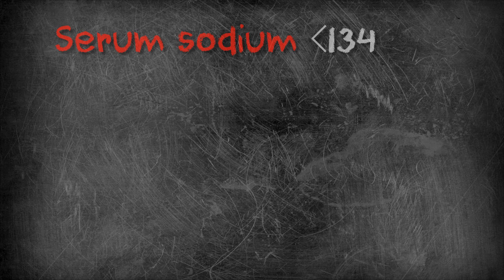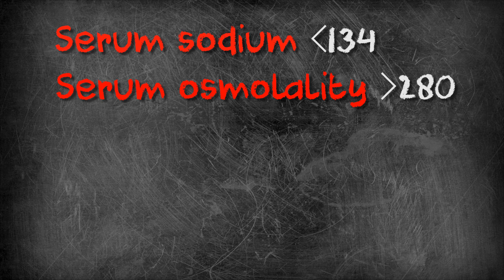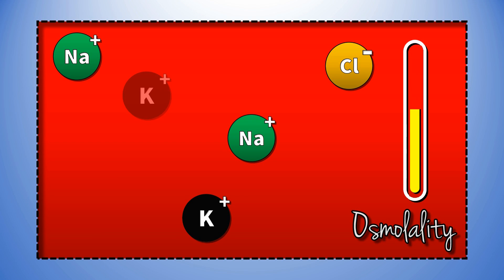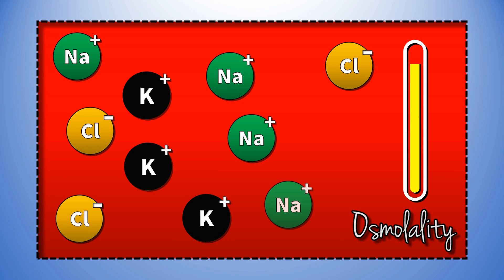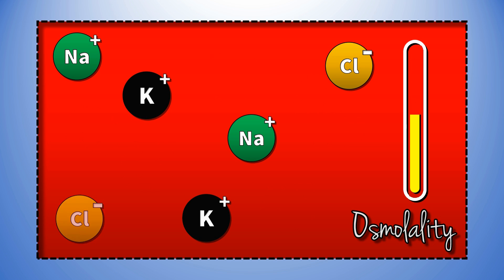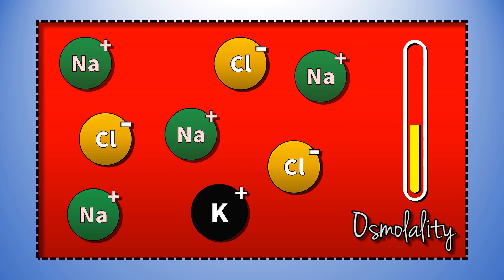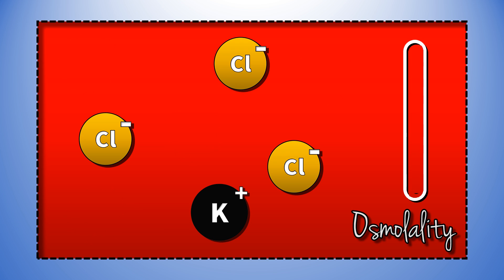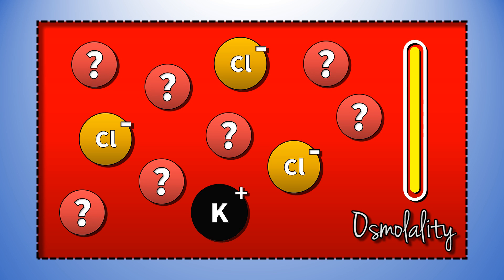To recap: you've got a patient with hyponatremia — low sodium — but a normal to high serum osmolality. What's occurring here? Remember, osmolality is a measure of how much solute there is in a solution, essentially how concentrated it is. The higher the osmolality, the more concentrated your solution; the lower, the more dilute. In a true hyponatremia, osmolality should be low — you have a more dilute solution. If osmolality is normal or high, it suggests another solute has taken sodium's place. This is known as pseudo-hyponatremia.